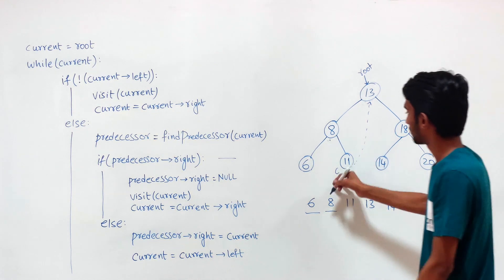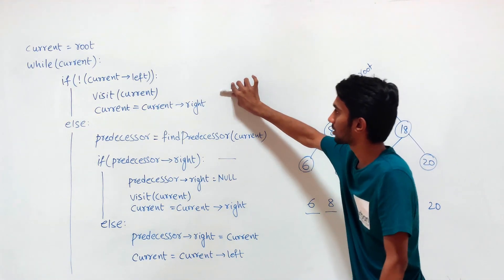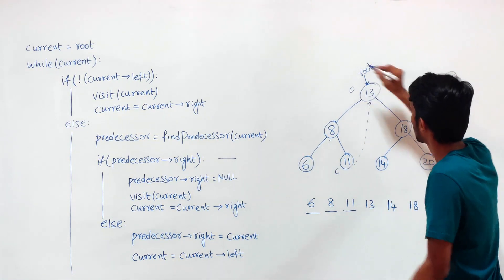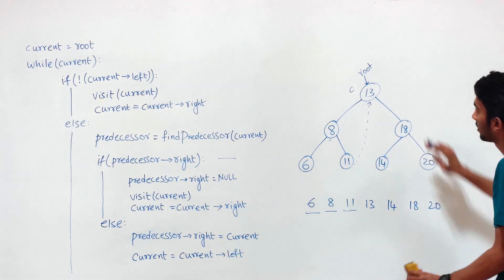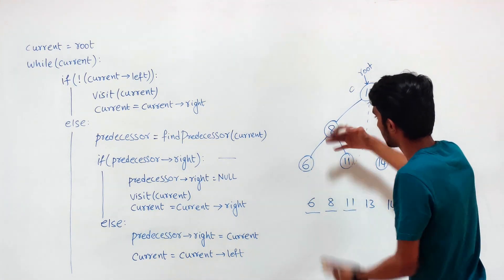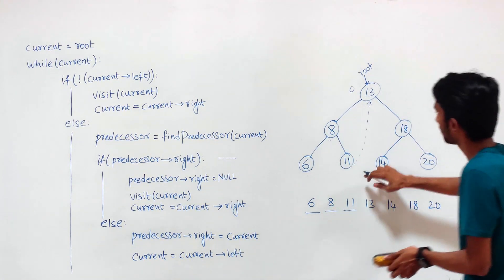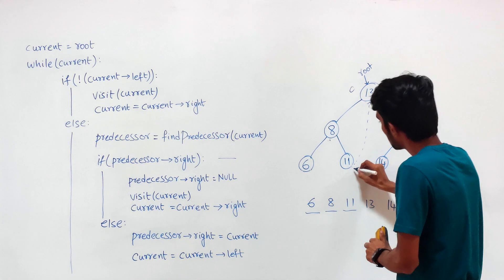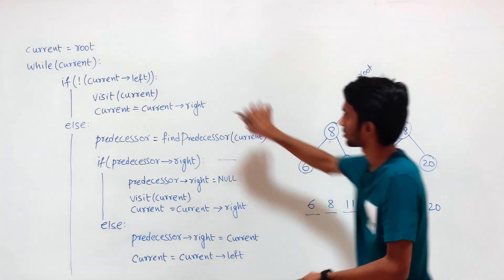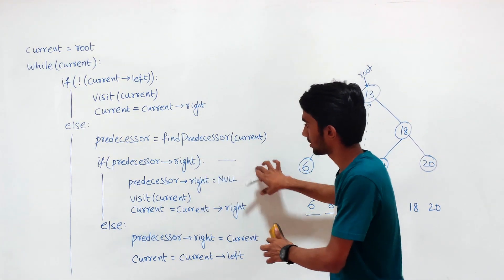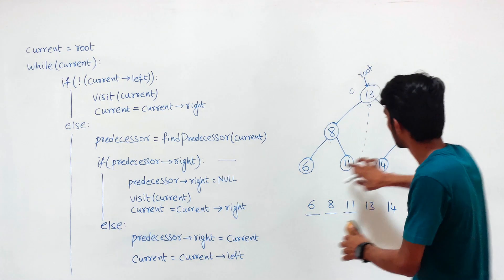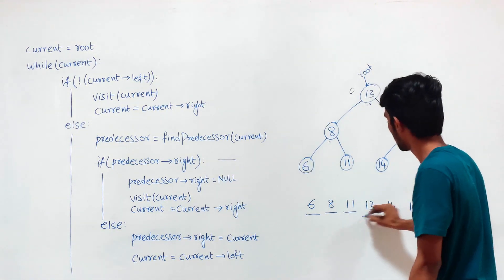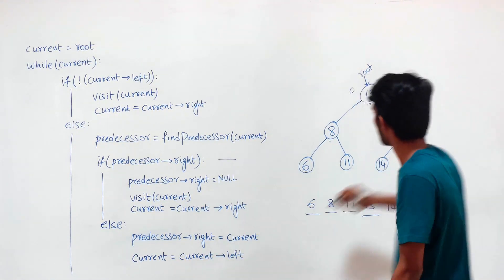When we are at 11, we don't have a left subtree, so we simply visit 11 and go to current's right. Control now goes back to 13. We have traversed the entire left subtree and returned to the current root. When we are at 13, we have a left subtree, but the predecessor's right exists, so we remove this link, visit 13, and go to current's right.